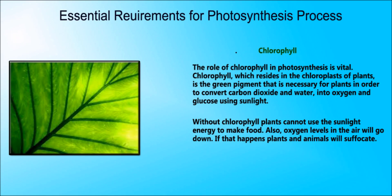Chlorophyll: The role of chlorophyll in photosynthesis is vital. Chlorophyll, which resides in the chloroplasts of the plants, is the green pigment that is necessary for plants in order to convert carbon dioxide and water into oxygen and glucose using sunlight. Without chlorophyll, plants cannot use the sunlight energy to make food.